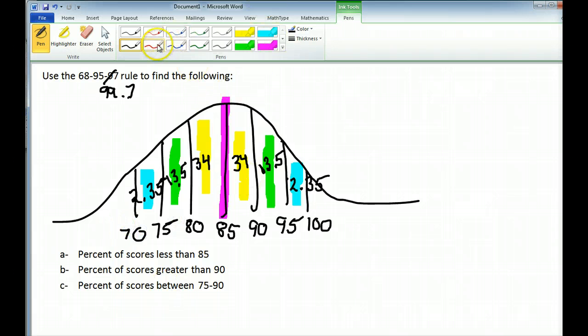Now we get to have some fun making some predictions. Predict the percent of scores less than 85. Well, if you notice, the 85 mark is the exact halfway or the exact middle of this. So 50% does fall to the left and 50% to the right.